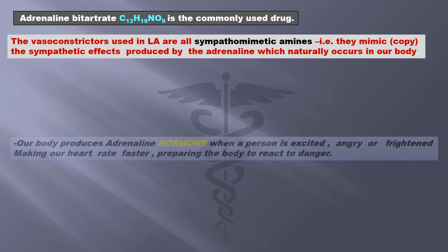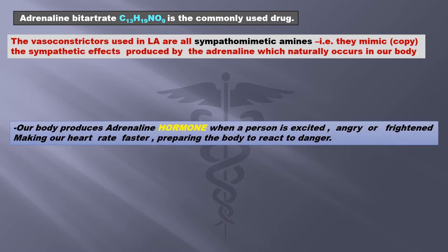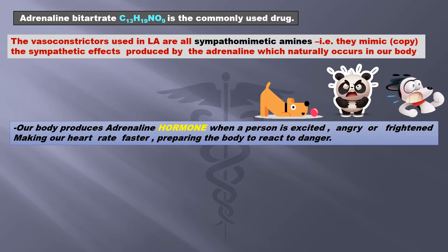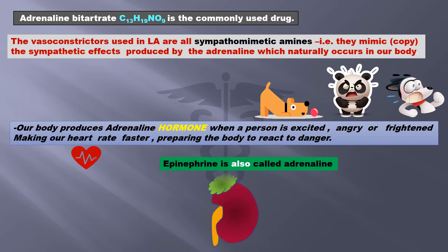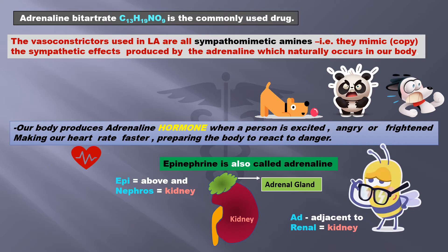Our body produces the adrenaline hormone when a person is excited, angry, or frightened, making our heart rate faster and preparing the body to react to danger. Epinephrine is also called adrenaline — epi means above and nephros means kidney; ad means adjacent to and renal again means kidney.